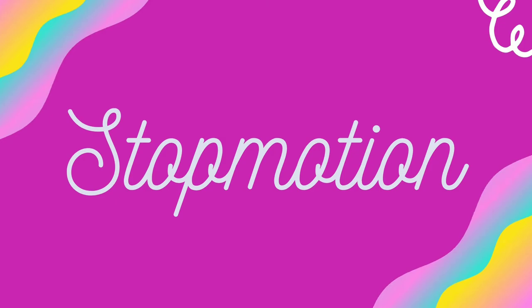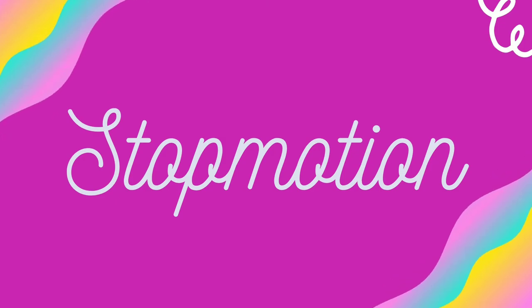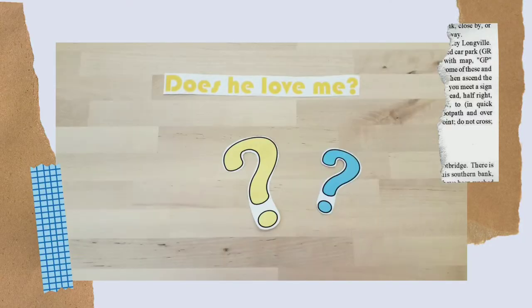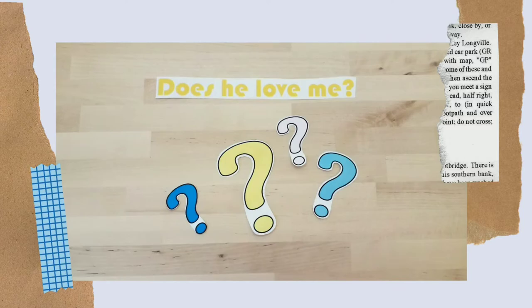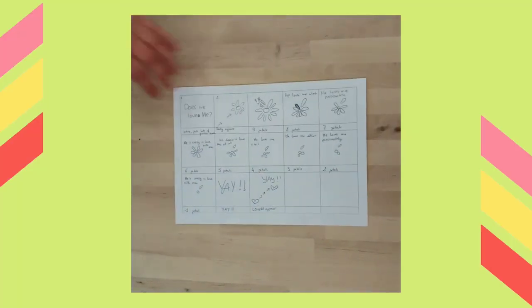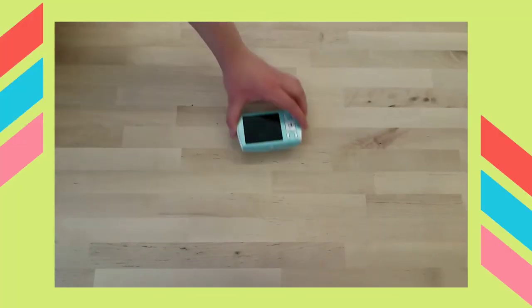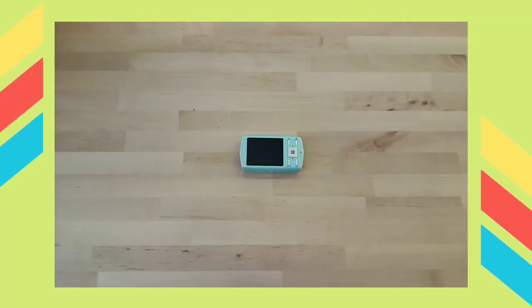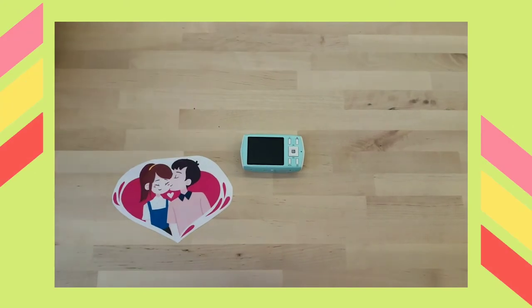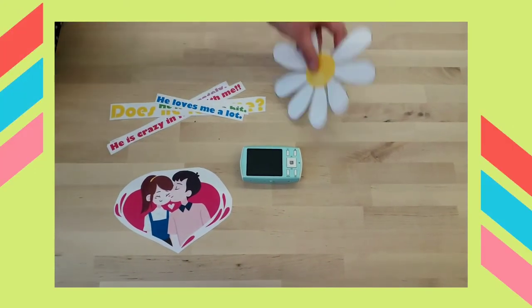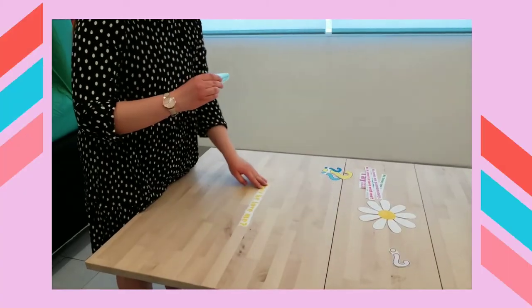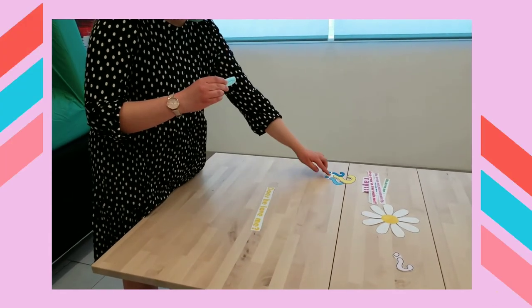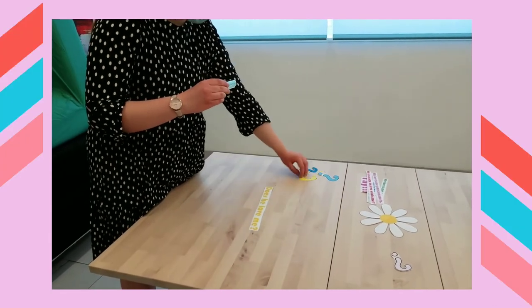Let's play with the stop motion technique. You will need a storyboard, a camera to take pictures, and other stuff that you might need in your picture. Start taking pictures in a sequence according to your storyboard.